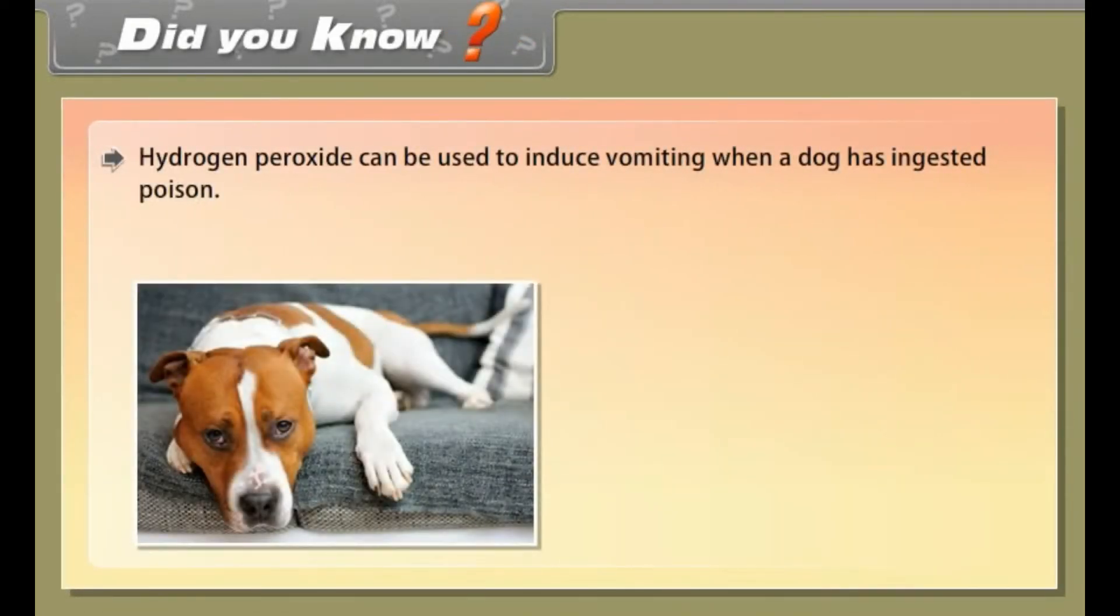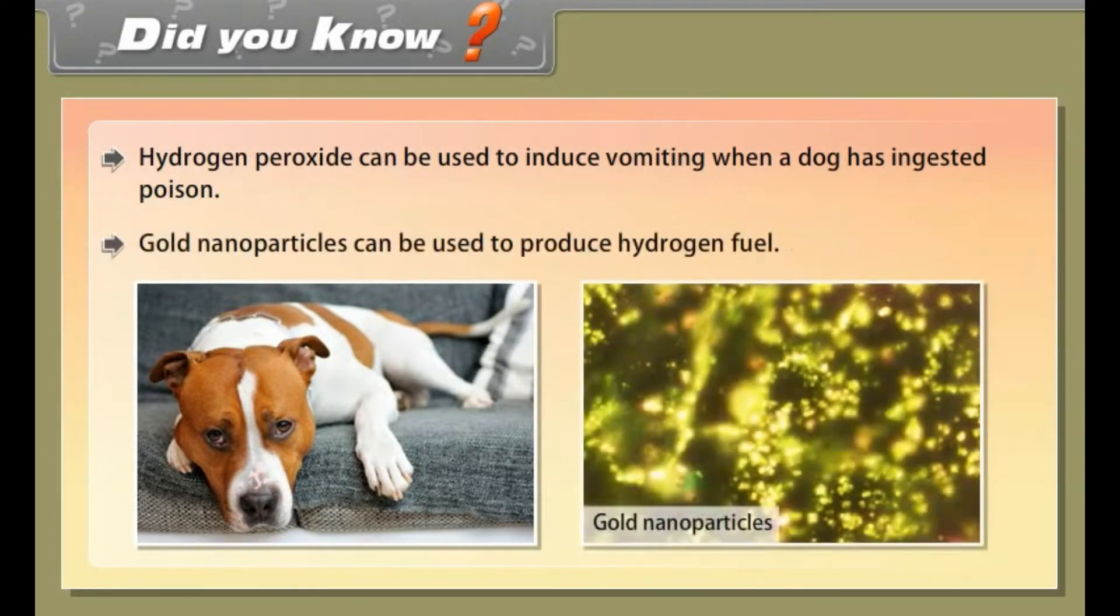Did you know: Hydrogen peroxide can be used to induce vomiting when a dog has ingested poison. Gold nanoparticles can be used to produce hydrogen fuel.